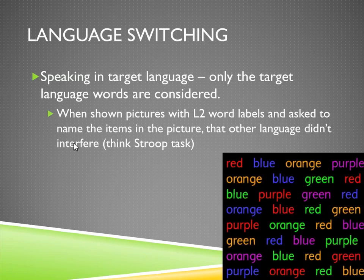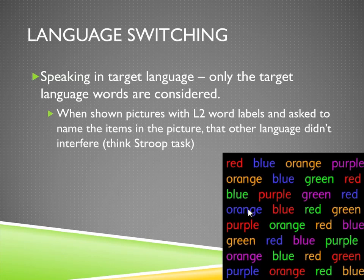If you're speaking in a target language — whether L1 or L2 — only the target language is considered. The other language doesn't interfere. Think about the Stroop task: you show colored words and ask someone to name the color. Because of the word superiority effect, people have a hard time not reading the words. But you don't see that interference between L1 and L2. If you show a picture of a cat with a French label but ask for the English word, that French label doesn't interfere. This implies the other dictionary is turned off when you're speaking in the target language.